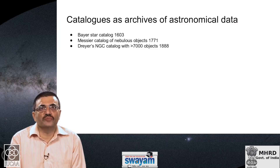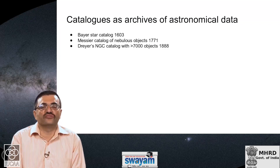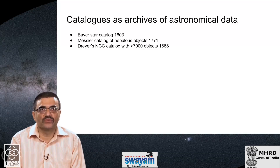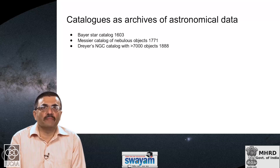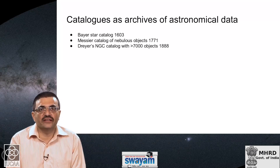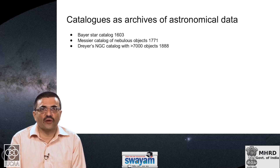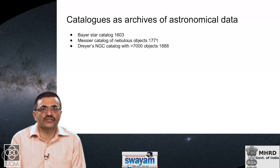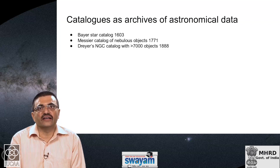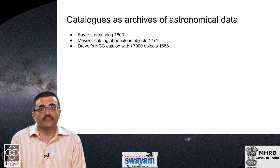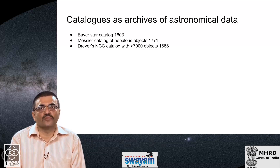More than a century later, the French astronomer Charles Messier compiled his catalog of nebulous objects in 1771. The purpose was to provide comet hunters with a list of well-known extended nebulous sources in the night sky which could frequently be confused with comets. Messier's catalog had about 100 objects — a motley collection of what we know today to be gaseous nebulae, galaxies, and star clusters, both open clusters and globular clusters. This catalog is still used today by amateur astronomers who like to hunt down the Messier objects.